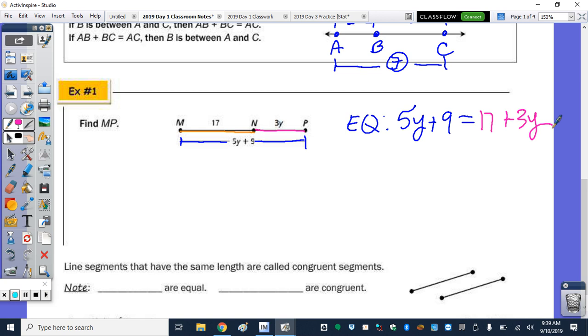So the whole equals the sum of the two parts. At the high school, we are okay with you guys not showing all of the inverse operations to solve an equation. So to solve for y, if I subtract 3y from 5y, we get 2y, and that would cancel out on the right side. Subtract the 9 from 17, and we get 8. Divide by 2, and y is 4. So if y is 4, then back to my picture. Well, I can plug it in here and then add 17, but I'm just going to do 5 times 4 plus 9. And then 20 plus 9, mp is 29.